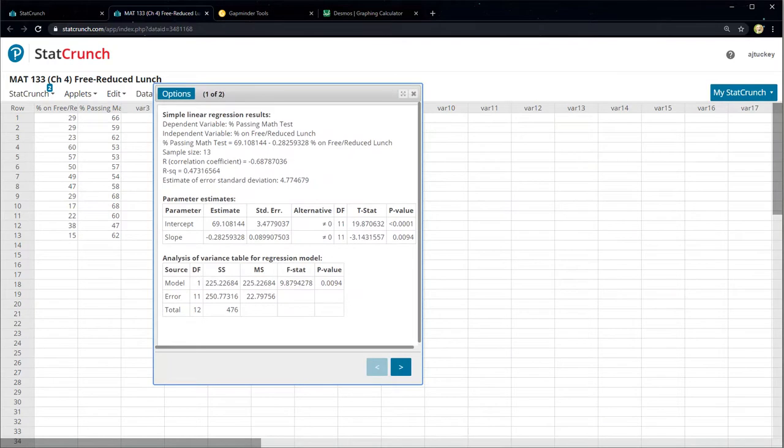And right here is the equation of the line. And they're writing it a little differently. That's y right there. Percent passing the math test, that's the y, equals 69.108, take away 0.283, and then percent on free-reduced lunch, that's x. So they're kind of writing it backwards. It's perfectly valid.